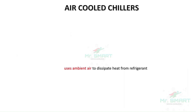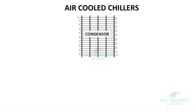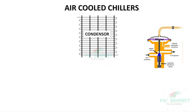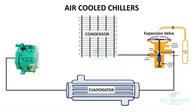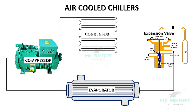An air-cooled chiller uses ambient atmospheric air to dissipate heat. The main components of an air-cooled chiller are the condenser, expansion valve, evaporator, and compressor.